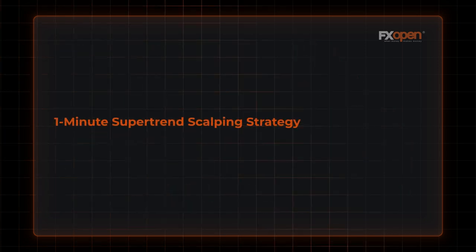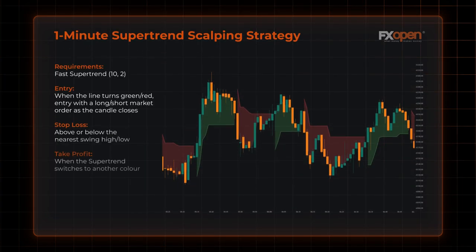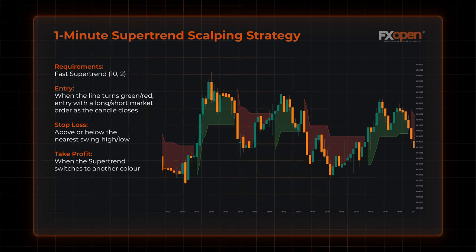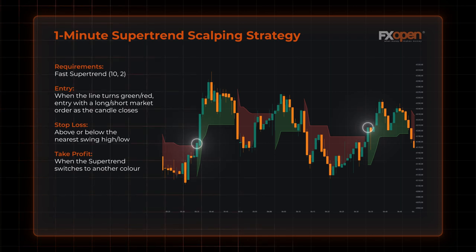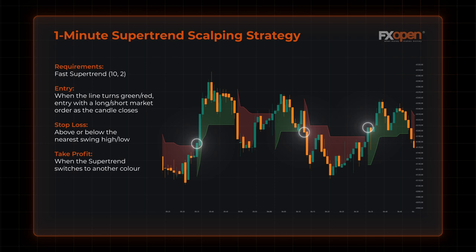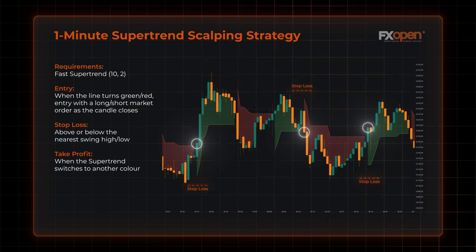One-minute Supertrend scalping strategy. Using the 10-period ATR and 2-factor multiplier, you can trade with a 1-minute Supertrend crypto scalping strategy, which may provide opportunities to enter early with relatively tight stop-loss levels. When the line turns green, you may open a long market order, while if the line turns red, you may consider a short market order. The entry is supposed to be at the candle's close. Stop-loss may be above or below the nearest swing high or low. You may close the trade when the Supertrend switches to another color.